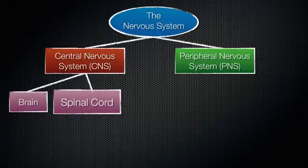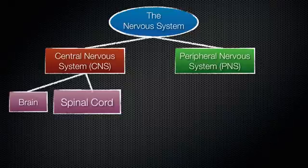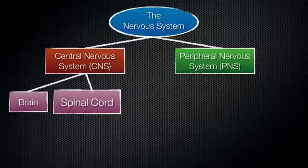And then of course we have the spinal cord. The spinal cord sends signals to and from the brain, to and from the rest of the body. So it's connecting the brain to the rest of the body. Sensory signals come into the spinal cord and motor signals go out from the spinal cord, and we're going to talk about those as we deal with the peripheral nervous system.